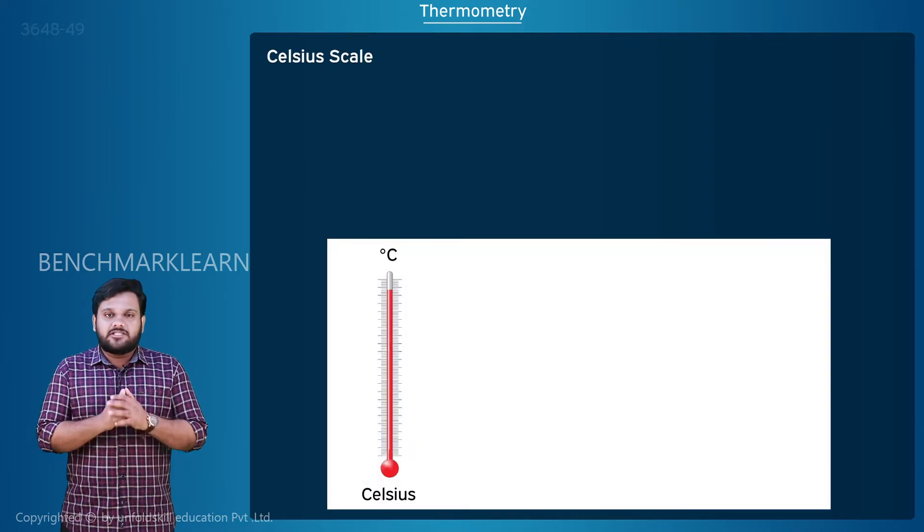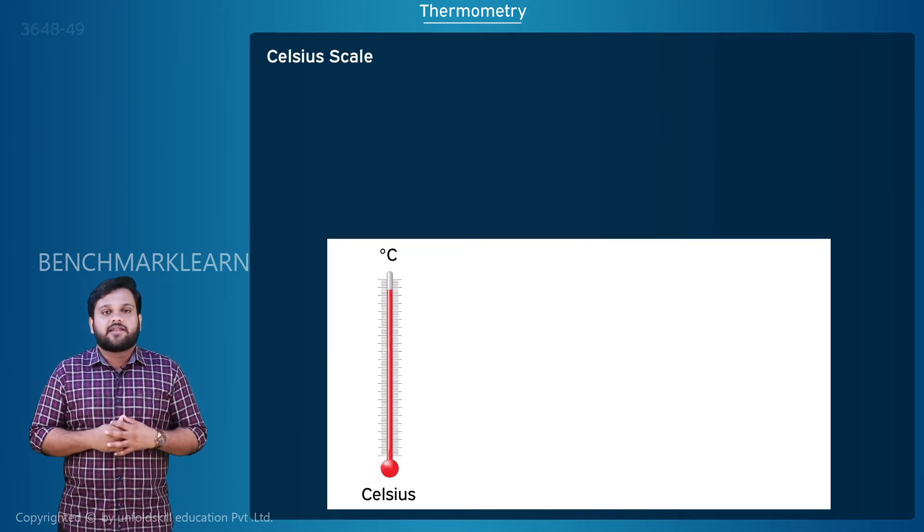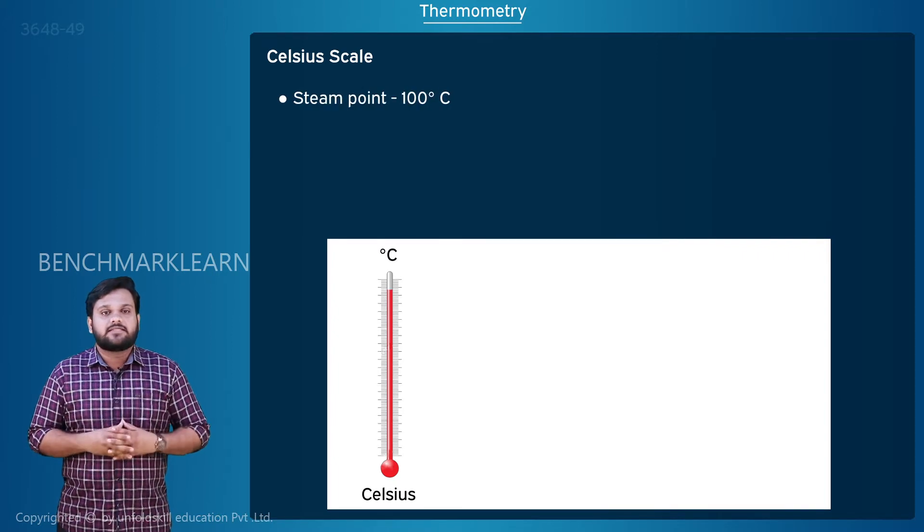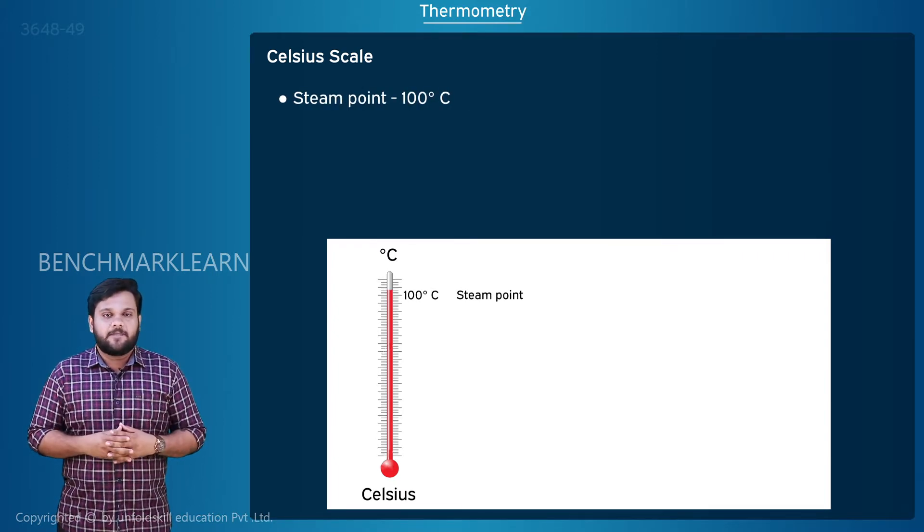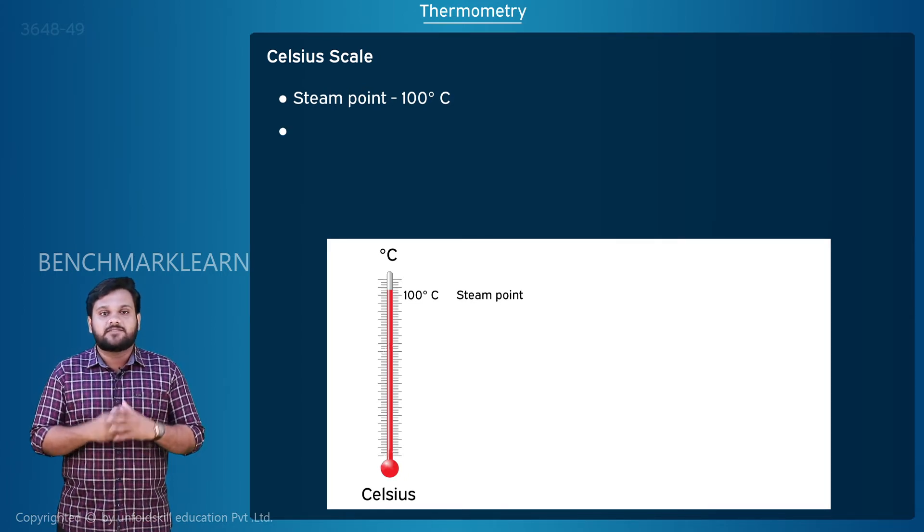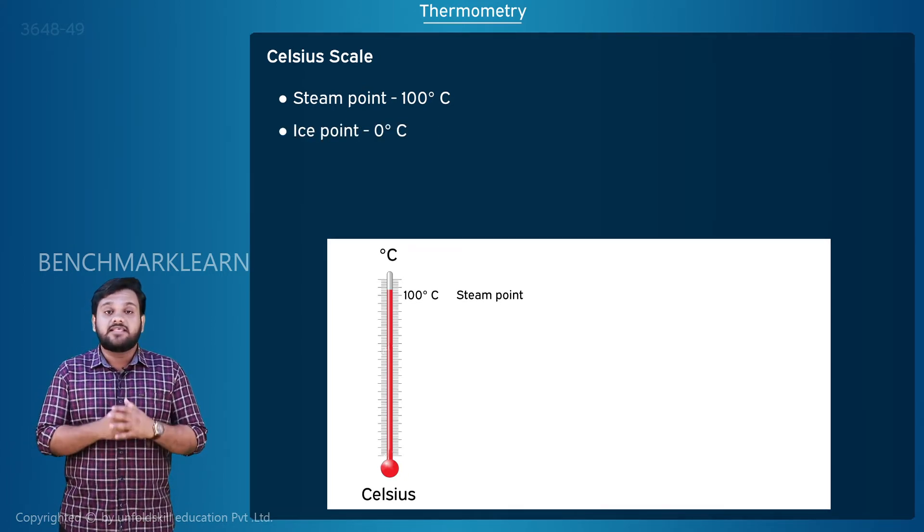For Celsius scale, the thermometer is kept in contact with the boiling water, which is the steam point, and is marked as 100 degrees Celsius. Then it is kept in contact with the melting ice, that is the ice point, and is marked as zero degrees Celsius.